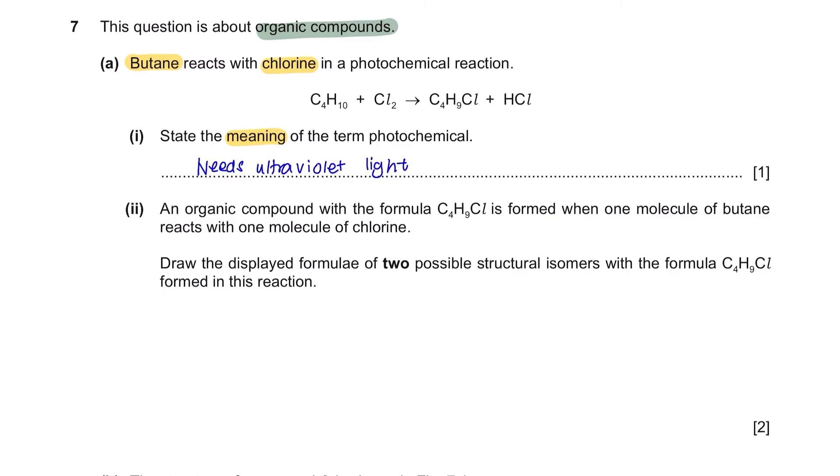Part 2. An organic compound with the formula C4H9Cl is formed when one molecule of butane reacts with one molecule of chlorine. Draw the displayed formula of 2 possible structural isomers with the formula C4H9Cl formed in this reaction. Firstly, we will draw out 4 carbons with all of their bonds attached to it. Next up, we have chlorine. We will place chlorine at 2 different carbons for each of these compounds, giving you 2 different structural isomers. And lastly, fill in your compound with hydrogens and make sure there are 9 of them.